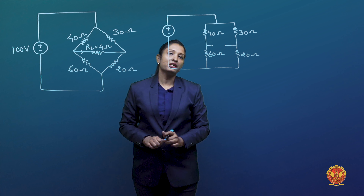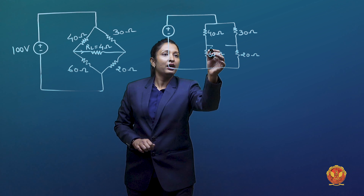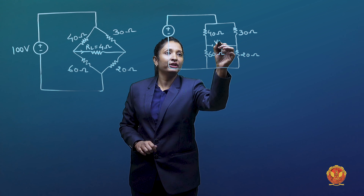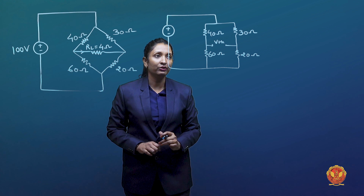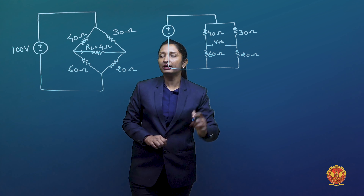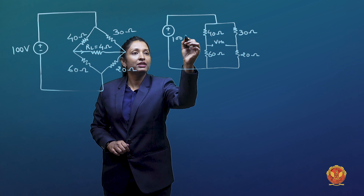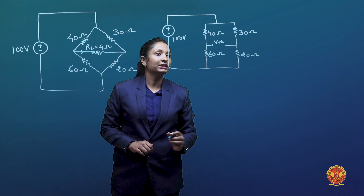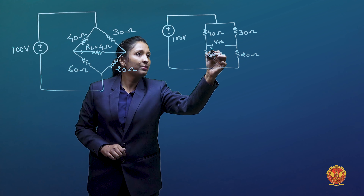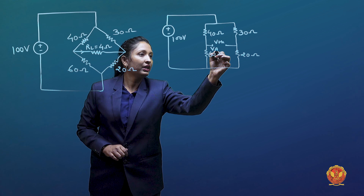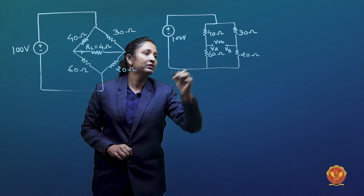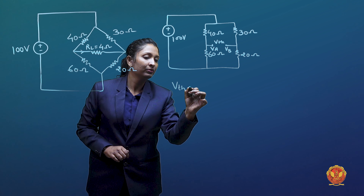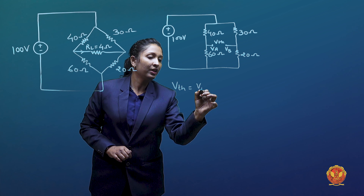As we opened it, we have to find out the open circuit voltage here, or the Thevenin's equivalent voltage. We can apply voltage division here. I am talking about Va and Vb, so Vth will be equal to Va minus Vb.